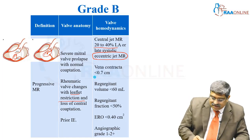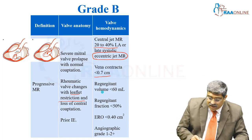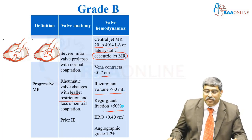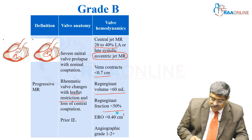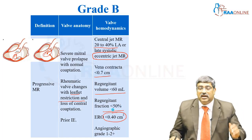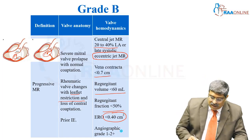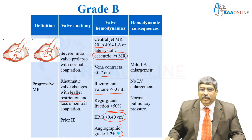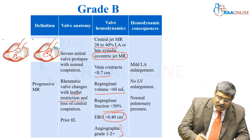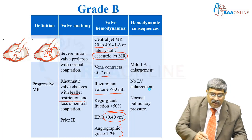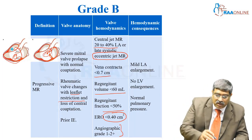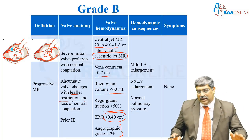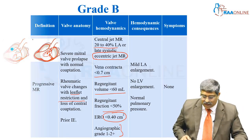In Grade B, the vena contracta is less than 0.7 cm, regurgitation volume is less than 60 ml, regurgitant fraction is less than 50%, and the effective regurgitation orifice area is less than 0.04 cm². The angiographic grade is 1 to 2 plus. There may be slight LA enlargement but LV size and pulmonary artery pressure are normal. The patient is totally asymptomatic.